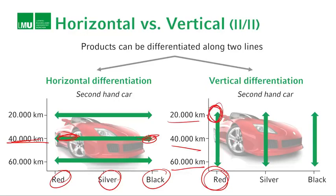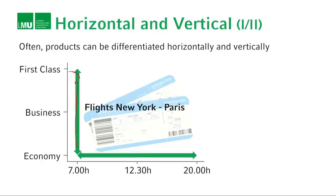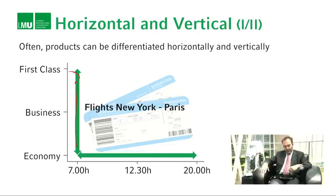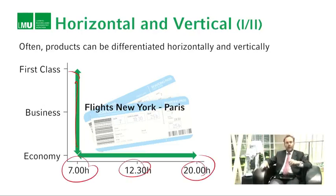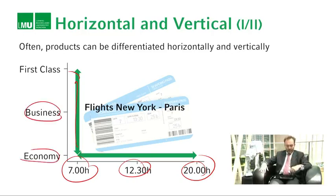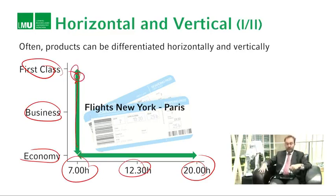So horizontal differentiation is like a spread, while vertical differentiation is basically like a quality ladder. Plenty of products will have both dimensions. Take flights: the different departure times are horizontally differentiated because people have different preferences, whereas economy, business, and first class are vertically differentiated — if a first class seat were available at the same price as business class, everyone would go for first class.